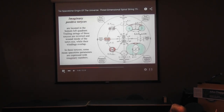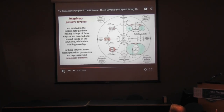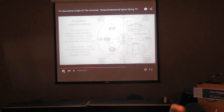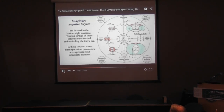Imaginary positive Tauruses are located in the bottom left quadrant. Trailing strings of these Tauruses are inverted and wound inside the Tauruses, and all mean spacetime parameters are expressed with imaginary numbers. Imaginary negative Tauruses are located in the bottom right quadrant. Trailing strings of these Tauruses are outward and encircling the Tauruses, and all mean spacetime parameters are expressed with imaginary numbers.